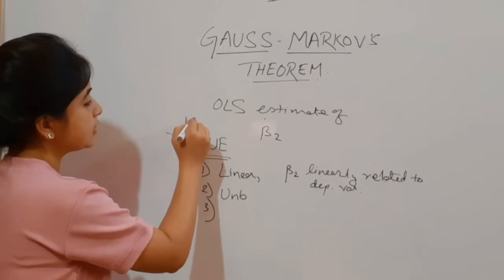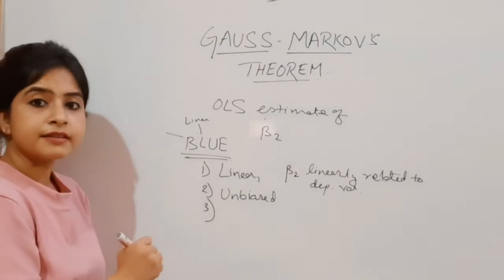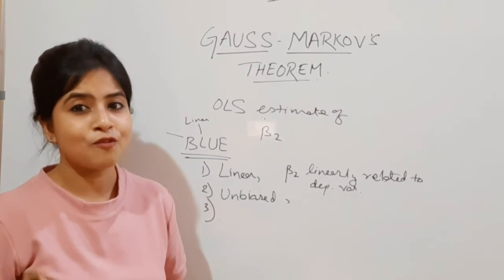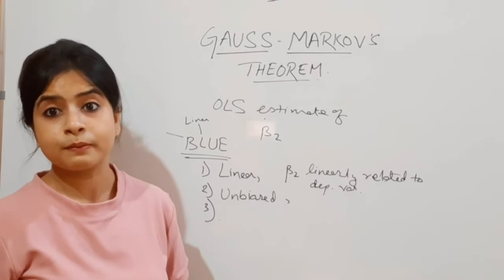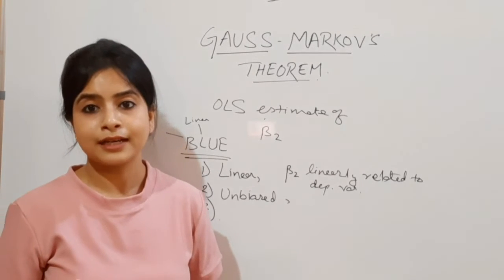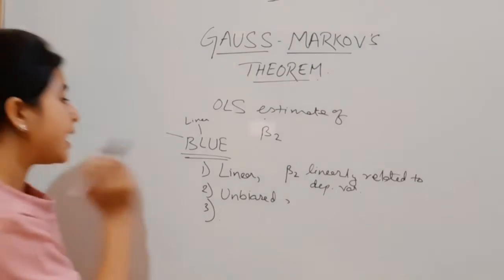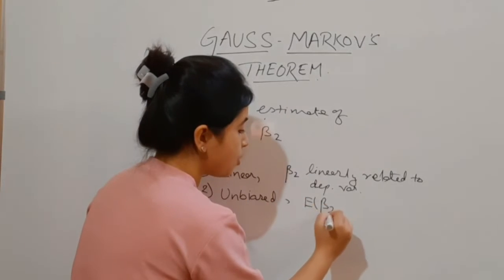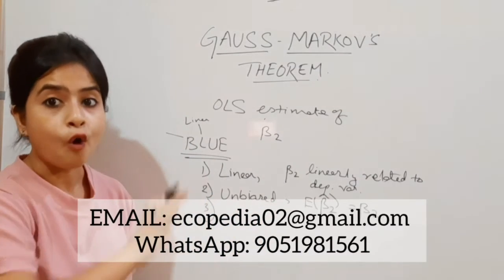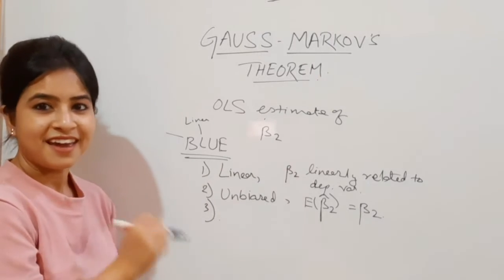Coming to the second point of BLUE: it has to be unbiased — that is the U in BLUE. You can remember: L for linear, U for unbiased. The unbiased property of the OLS estimate of beta 2 means that the expectation of beta-hat 2 has to be equal to beta 2. That is the unbiased property. I have explained this exclusively in a previous session on econometrics — links are on screen and in the description box.